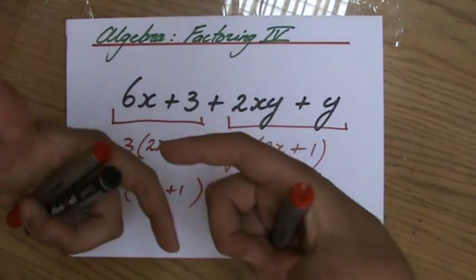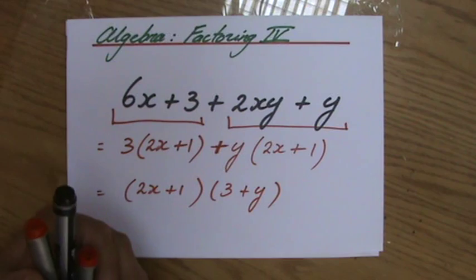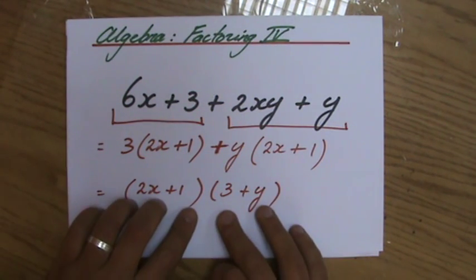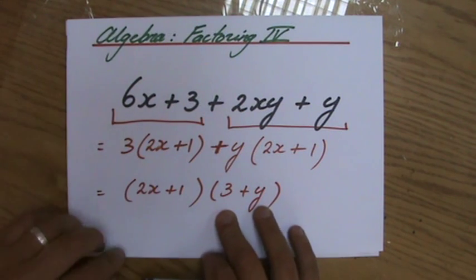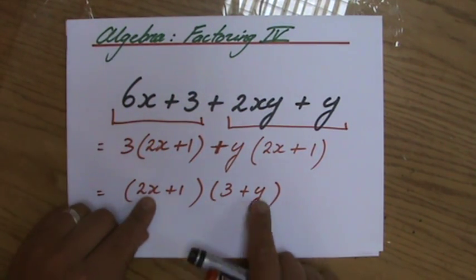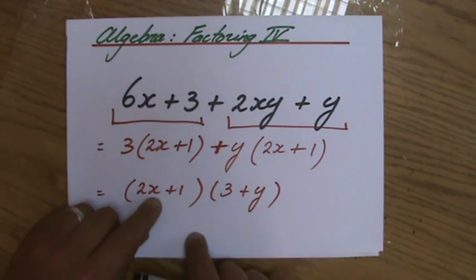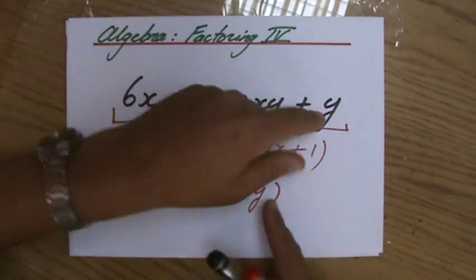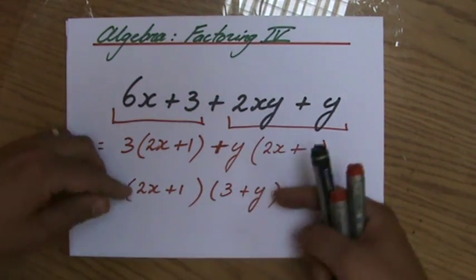As you can remember, perhaps the FOIL method, when we were expanding expressions, would have to be applied here when you expand it again. So you can check that. 2x times 3, 6x. 2x times y, 2xy. 1 times 3 is 3. And 1 times y is y. So fantastic. If I expand my answer, I get my original question again.